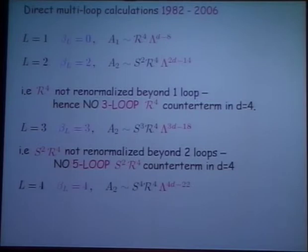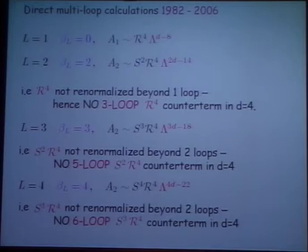N equals four hasn't yet been calculated, but I'm assuming these people who've done these very impressive calculations will do that soon, and I'm further assuming there'll be an extra power of S — which is an assumption that maybe I shouldn't be making. But if it's true that there's an extra power of S, then we'll also find that there's no six-loop contribution. It means that S cubed R to the fourth is not renormalized beyond six loops. So there's no counter-term. And you go on like this, and you wonder where it's going to stop.